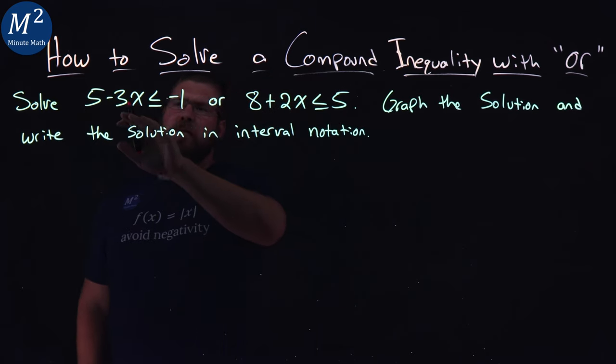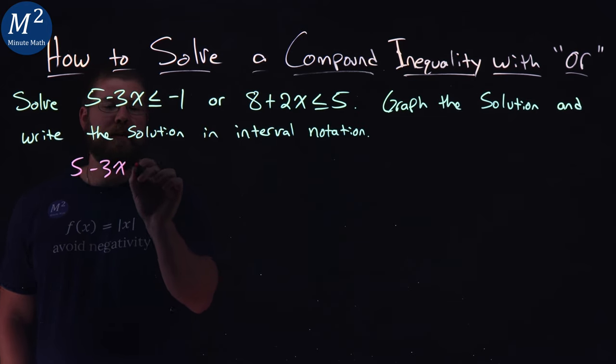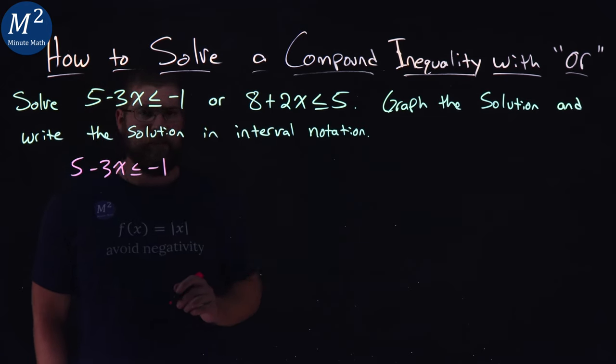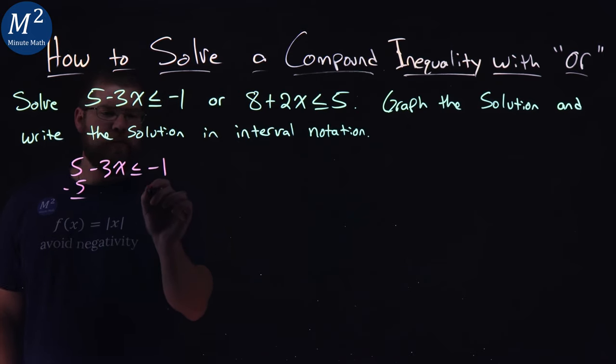So first I'm going to start with my first inequality. 5 minus 3x is less than or equal to negative 1, and we're going to solve this inequality. I'm going to subtract 5 from both sides here, not too bad.